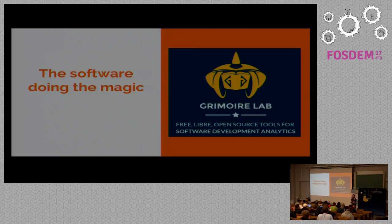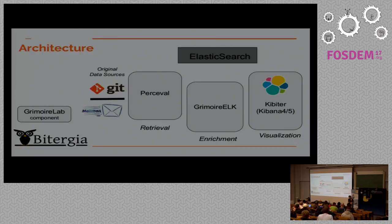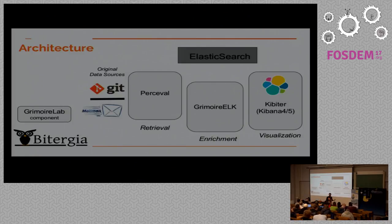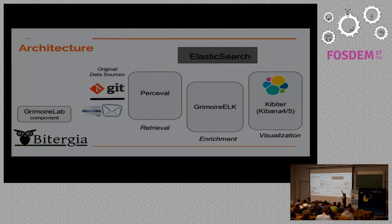That's GrimoireLab. We started about one year ago and this is the first time we're presenting it fully. GrimoireLab has a simple data flow structure. The data flow starts in repositories — Git, GitHub, Mailman, whatever. We have a tool called Perceval which basically goes to repositories, extracts information, and uploads to Elasticsearch if you want. Perceval is completely database agnostic — it only gets the data and produces a collection of JSON documents that you can upload anywhere. In our case, we have software for uploading to Elasticsearch. That's what we call the raw index.